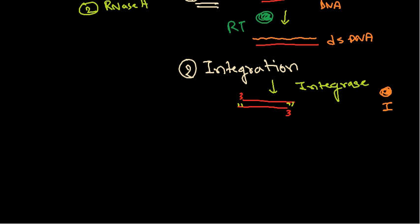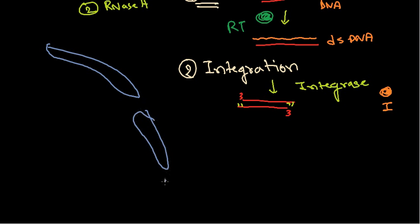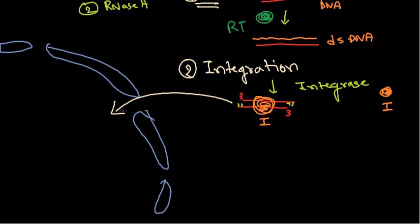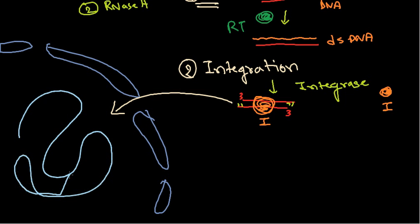After the sticky ends are generated, this viral DNA is taken inside the nucleus of the host cell. Integrase acts as a carrier, binding to the viral DNA and transporting it into the nucleus. Inside the nucleus there is the host genome, and the viral DNA is integrated somewhere within the host genome — this completes the integration stage.